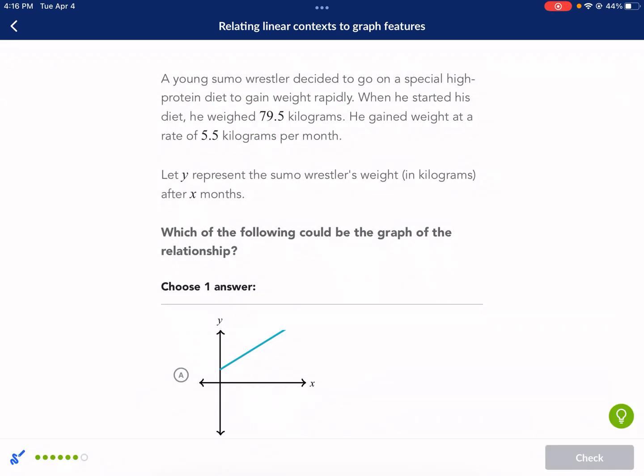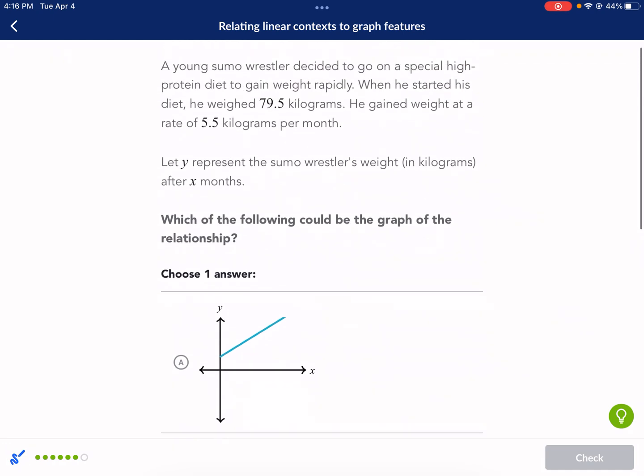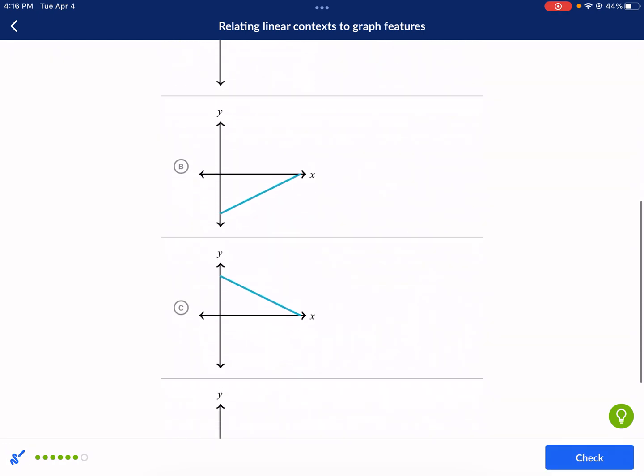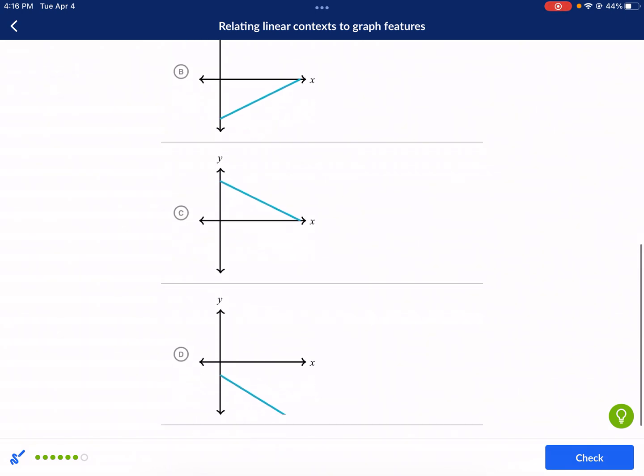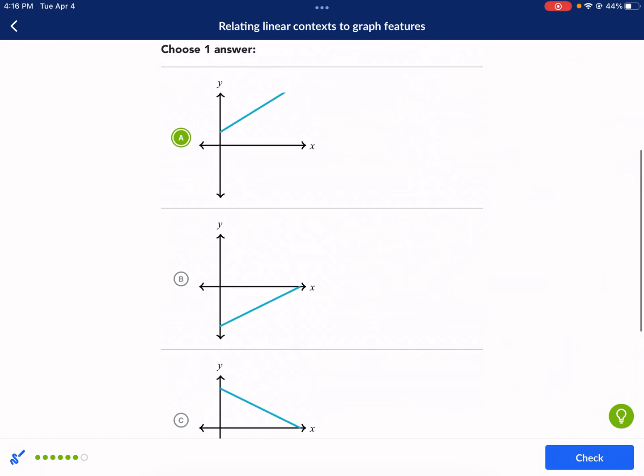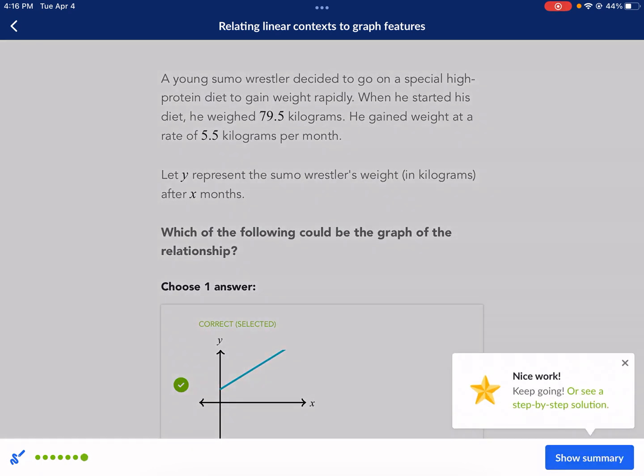It's going to be A. So if he's gaining weight, he started at a weight, you can't have negative weight. So D is wrong and B is wrong. And he's not losing weight and he can't weigh zero. So definitely A is your correct answer. And there we go. So I hope this was a helpful video.